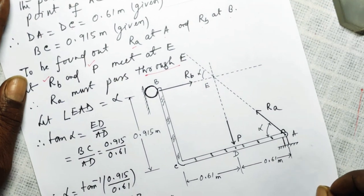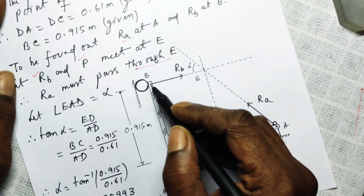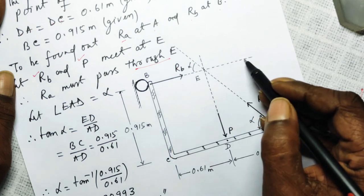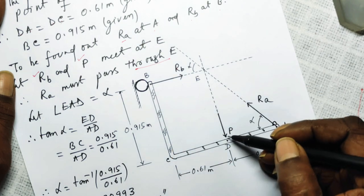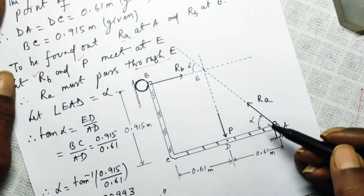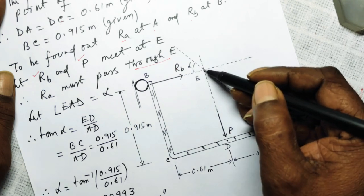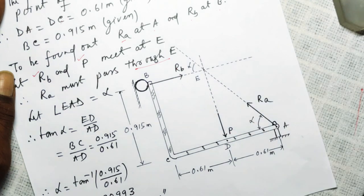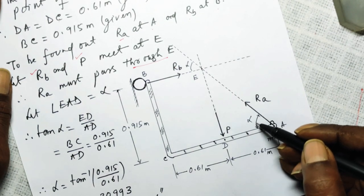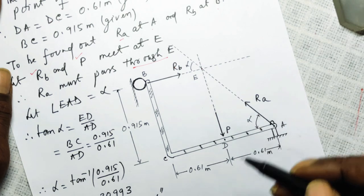So the reaction R_A must pass through the same point E for the condition of equilibrium. Let the angle EAD be called alpha. The reaction at B, when its line of action is produced, and the line of action of P, when produced, meet at the common point E. The reaction from point A must pass through this same point E. Let angle EAD equal alpha.